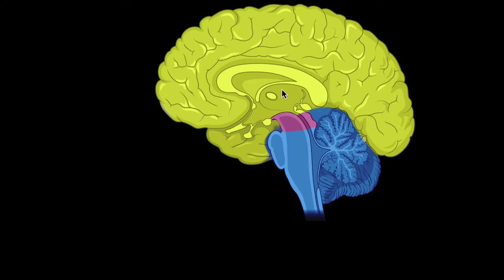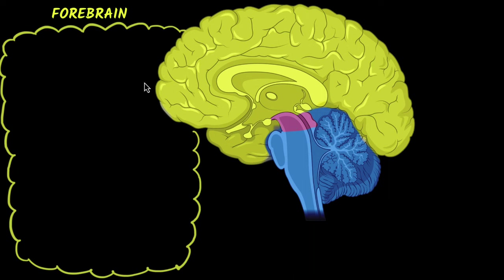Let's explore the major parts of the brain and their functions. Based on the color, you can see the brain can be divided into three parts. We have the forebrain — the big yellow section is the forebrain. Then you have the midbrain; this pink section over here is the midbrain.